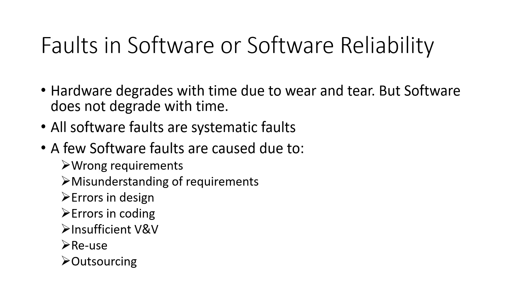The next thing to look at is faults in software, or software reliability. Till now we have dealt with faults in hardware, deriving hardware fault metrics and safety mechanisms, because hardware degrades with time. Due to wear and tear, a fault in one hardware component can result in more hardware faults and cause the next hardware to fail. But in the case of software, there is no wear and tear, and because of this reason, software does not degrade with time. Therefore, all software faults are systematic faults.